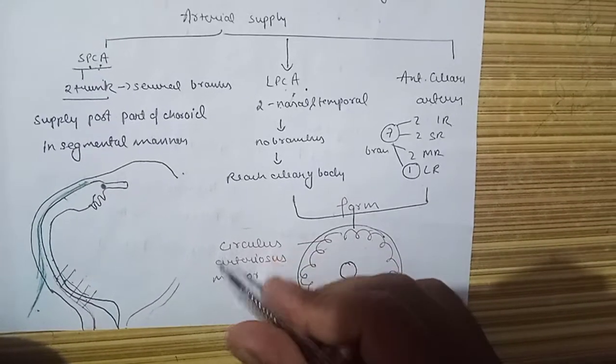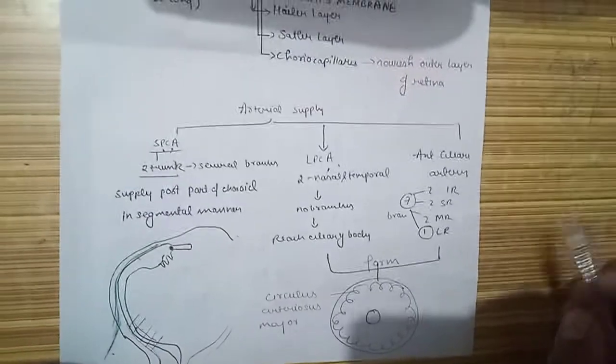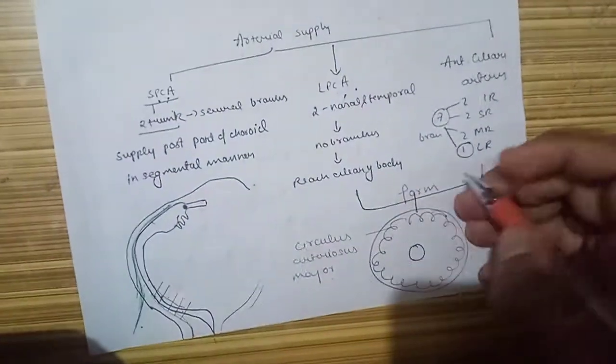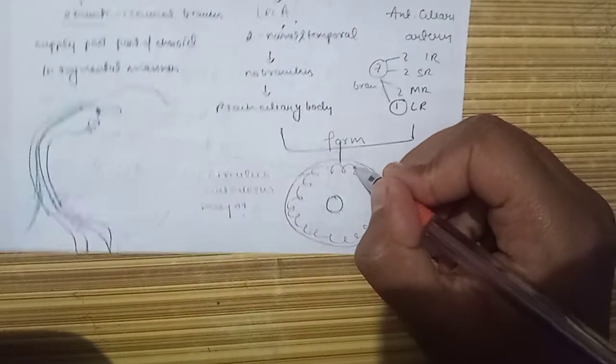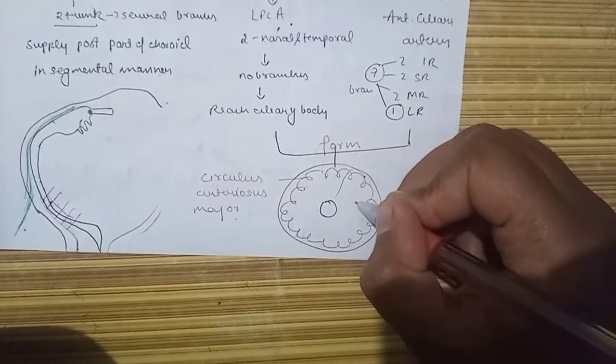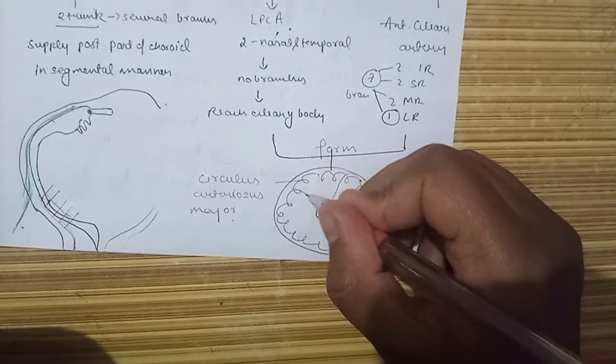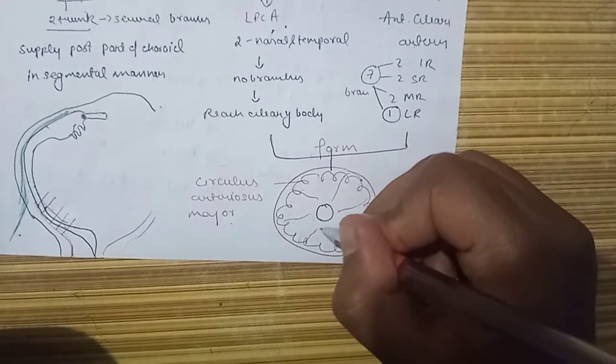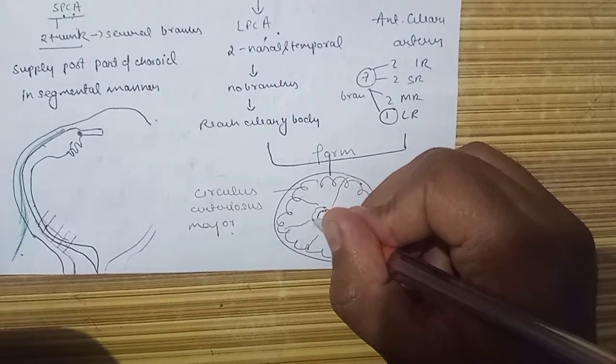This is known as the circulus arteriosus major, which supplies the major part of the iris. Radial vessels run radially from this, and these vessels form a minor plexus around the pupillary margin.